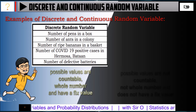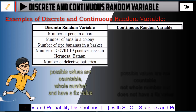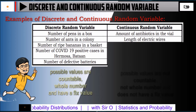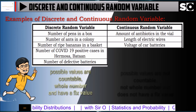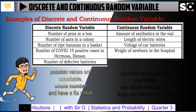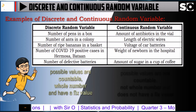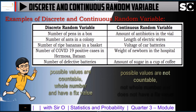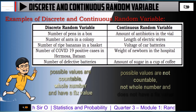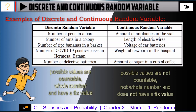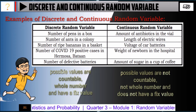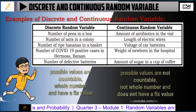Examples of continuous random variables include: amount of antibiotics in a vial, length of electric wires, voltage of car batteries, weight of newborns in the hospital, and amount of sugar in a cup of coffee. The possible values for continuous random variables are not countable, not whole numbers, and do not have a fixed value. For more examples, please use the link below.